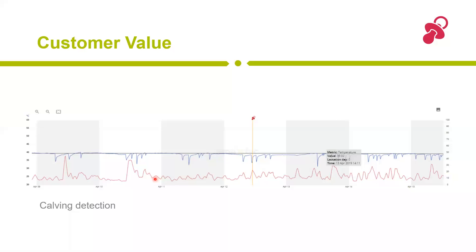What is the customer value from the pH side? You can do feeding management with it. Another value we offer is calving detection: around 15 to 18 hours before calving, we can predict the imminent birth by detecting a temperature decrease. Most of the time the real calving happens after that window, so the farmer can already prepare the cow.